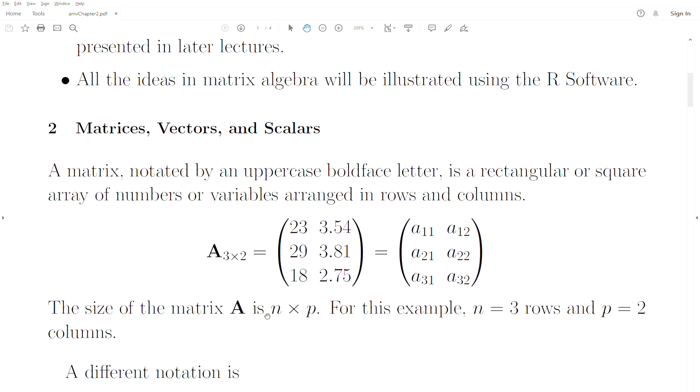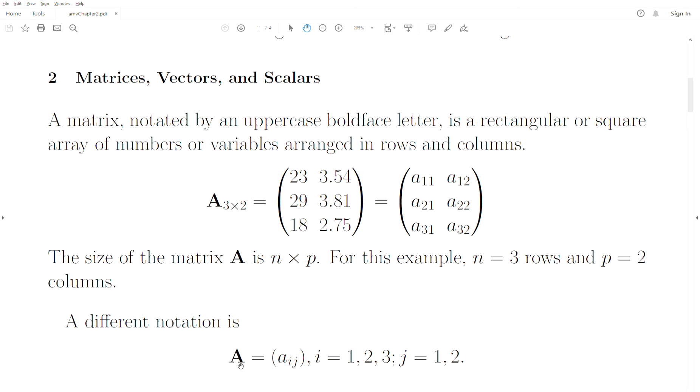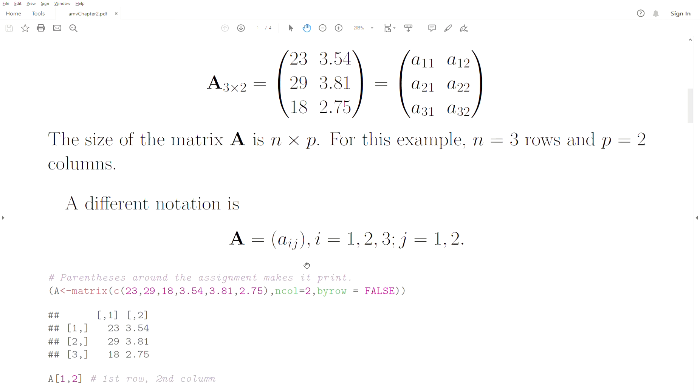This matrix generically is size n by p. In this example, n is three and p is two. A different notation: you can write capital boldface A equals, and then in parentheses put what's in that matrix. Generically, we call them Aij where i goes from one to three and j goes from one to two. Notice that this took up half a line, where if we represent it like this, it took up three lines. So this is just a tighter, more concise way to denote a matrix.